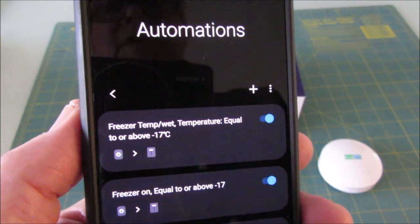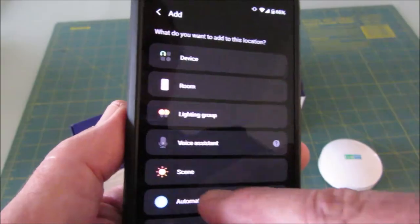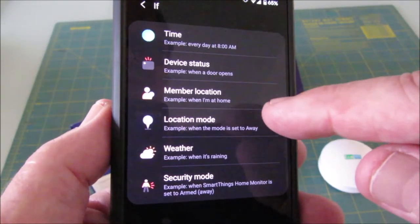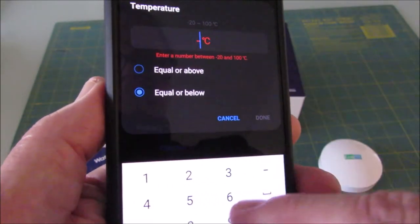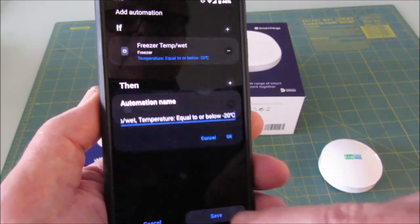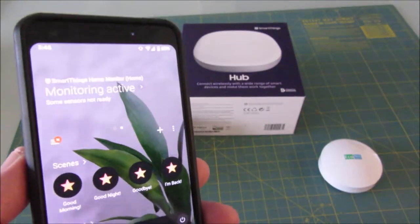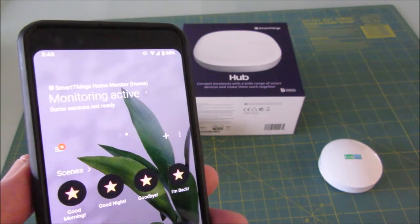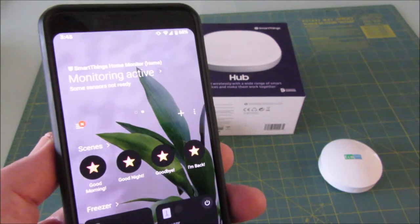Okay, so now that half is done. That's going to turn the freezer on when it gets above minus 17. So now let's make a routine. We want to add another automation that turns off the freezer when it gets below minus 20. We want to go equal to or below and let's go minus 20. When the freezer goes below, getting too cold below minus 20, it's going to turn the freezer off and it's acting like a thermostat.